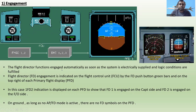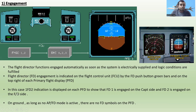The flight director functions engage automatically as soon as the system is electrically supplied and logic conditions are fulfilled. The flight director FD engagement is indicated on the Flight Control Unit by the FD push button green bars, and on the top part of each Primary Flight Display. The indication '1FD2' is displayed on each PFD to show that FD1 is engaged on the captain's side and FD2 is engaged on the first officer's side.